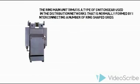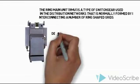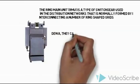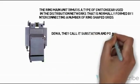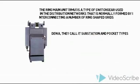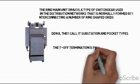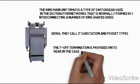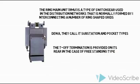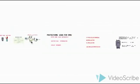The ring main system is also used to connect national grids and international grids. If you have an international grid, you can connect internationally. These are called substation pocket types. The ring main system provides T-terminals in the ring main unit. This is a very simple method. If you have any doubts, please comment, and thank you for watching — don't forget to subscribe to my channel.